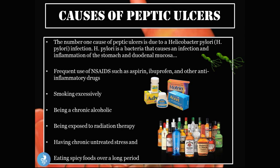So what are the causes of peptic ulcers? The number one cause is a Helicobacter pylori, or H. pylori, infection — a bacteria that causes infection and inflammation of the stomach and duodenal mucosa. Another cause is the frequent use of NSAIDs, or non-steroidal anti-inflammatory drugs, such as aspirin, ibuprofen, or other anti-inflammatory drugs.